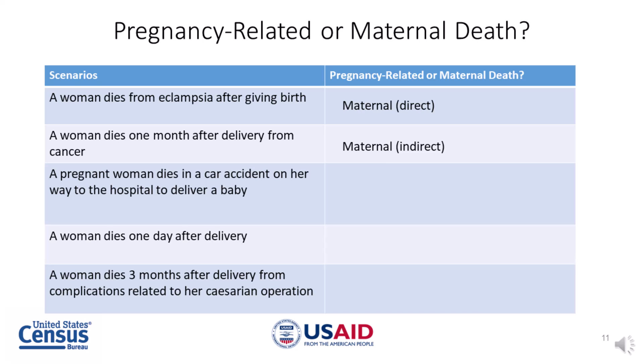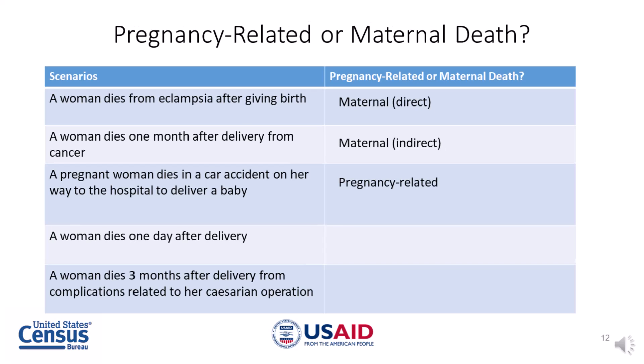Let's take a look at another scenario. A pregnant woman dies in a car accident on her way to the hospital to deliver a baby — is this a pregnancy-related death or a maternal death? If you said pregnancy-related, you are correct. Remember, pregnancy-related death is defined as the death of a woman while pregnant or within 42 days of termination of pregnancy, irrespective of the cause of death. Because accidental deaths are excluded from maternal deaths, this is not a maternal death.